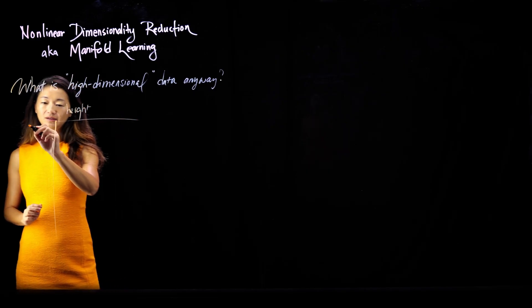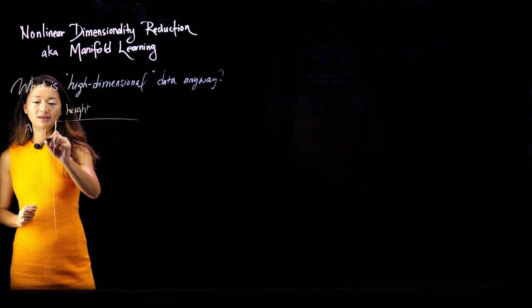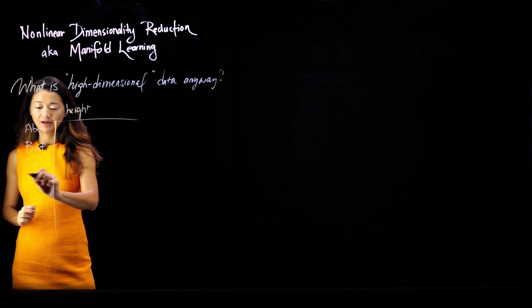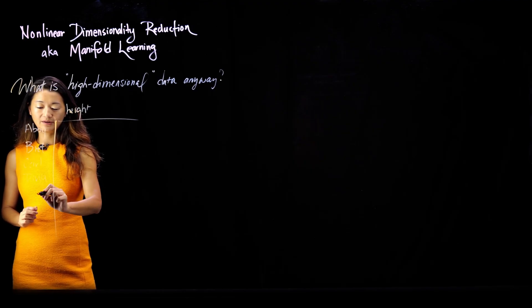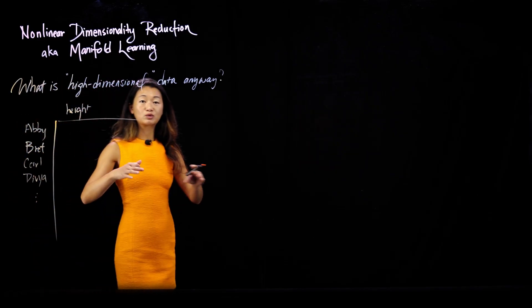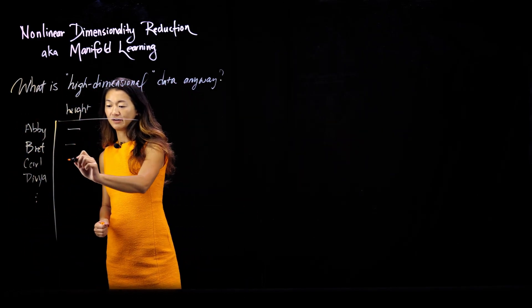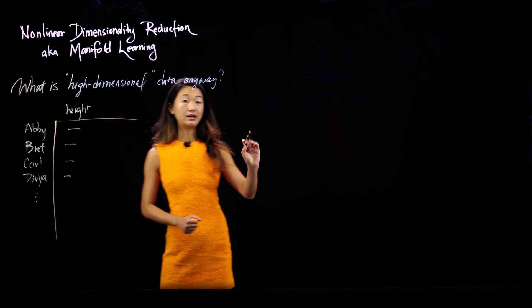So we can have a bunch of people. Let's say I have Abby, and then I have Brett, and then I have Carl, and then I have Divya, and so on and so forth, and I can make this large spreadsheet of people and how tall they are, and I'm going to write them down right here. So I have a data set of everyone and how tall they are.